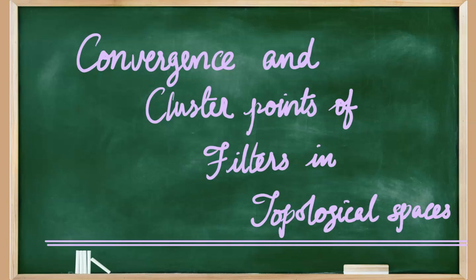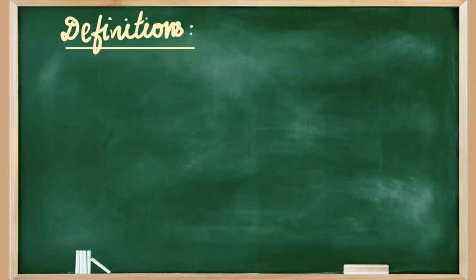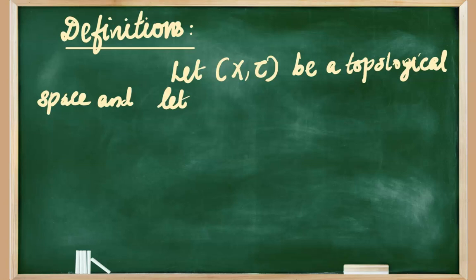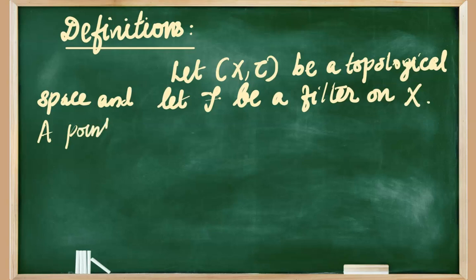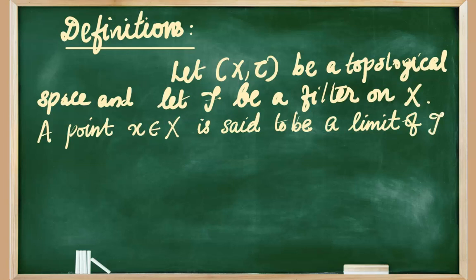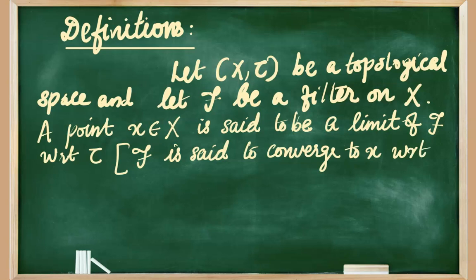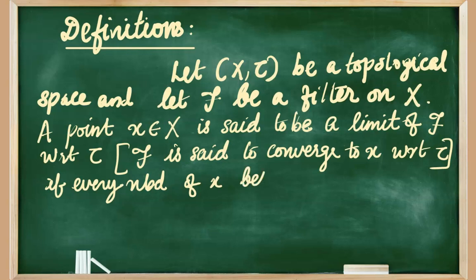We discuss convergence and cluster points of filters in topological spaces. Let X, τ be a topological space and let F be a filter on the set X. Then a point, say small x, element of X, is said to be a limit of the filter F with respect to the topology τ, or F is said to converge to x with respect to τ, if every neighborhood of x belongs to the filter F.